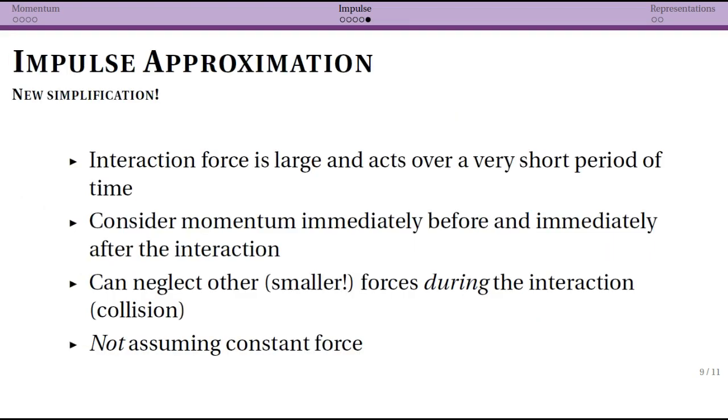There is going to be an important simplification that we're making whenever we're talking about impulse, and the book refers to this as the impulse approximation. And a good example is thinking about a ball hitting the wall. The interaction force, the forces between the ball and the wall, are very large, and they're acting over a very short period of time. So that's the first thing, that if this is true, then you can use the impulse approximation. If this first point is not true, it's not a good time to use the impulse approximation.